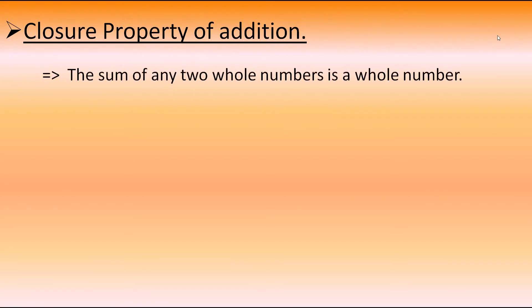This is the first property: closure property of addition and multiplication. First, I'll explain the closure property of addition. It says that the sum of any two whole numbers is a whole number. Means, if we take two whole numbers and if we add them, we get the answer as a whole number only.